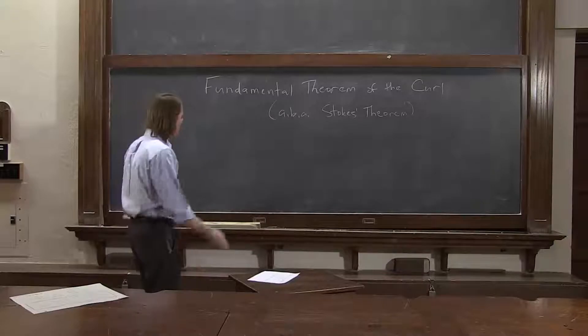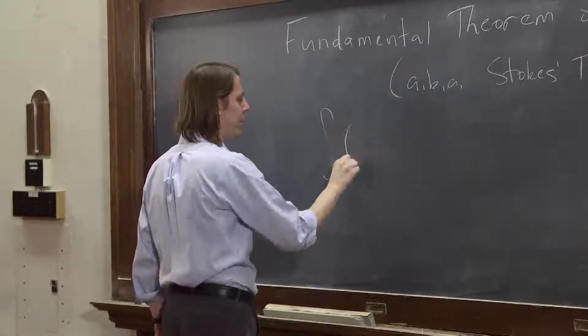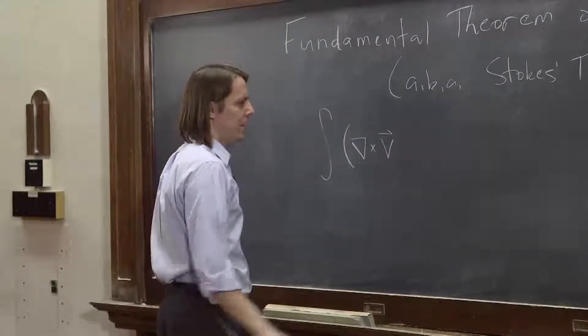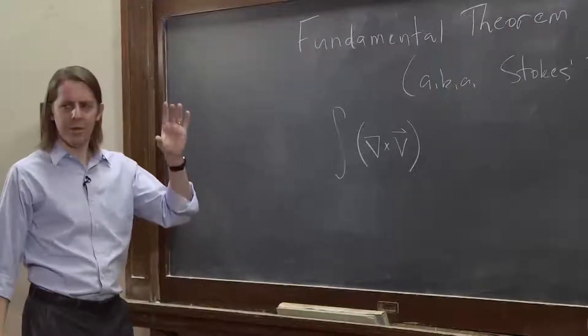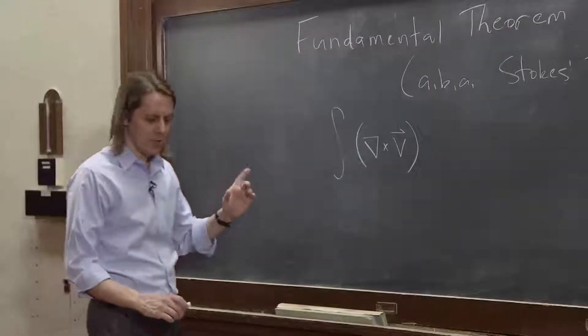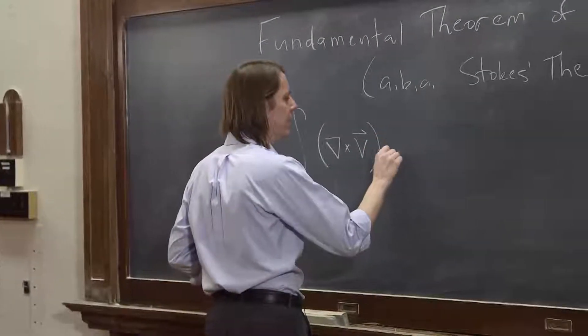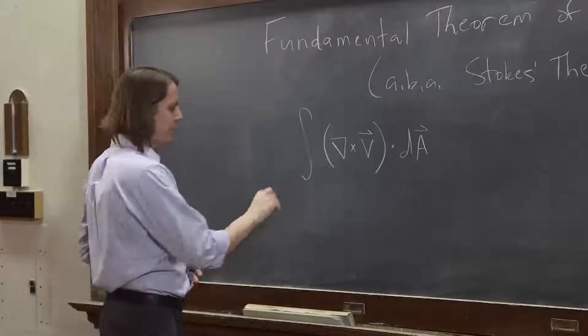So the integral of a derivative over a region, that was meaning the integral of the derivative we care about right now, del cross v. And we kept dropping little disks in. So this one is area. You think of the area. It's dotted with dA. So this is a surface integral.